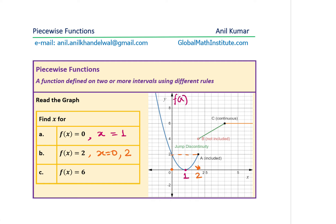How about f(x) = 6? Looking at this value, after a certain point all these x values give f(x) = 6. On the x-axis, that starts at x = 4. So if x is greater than or equal to 4, we get f(x) = 6. It is important to understand that f(x) equal to something could lead to many different x values — a many-to-one relationship.